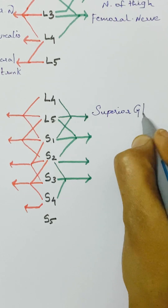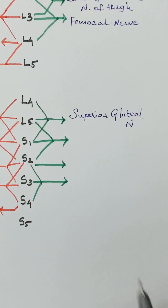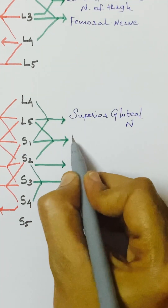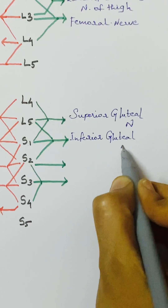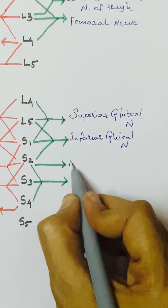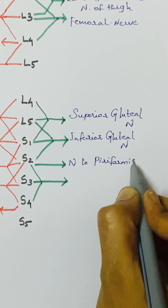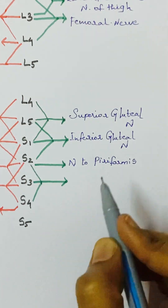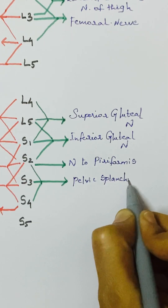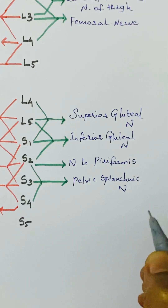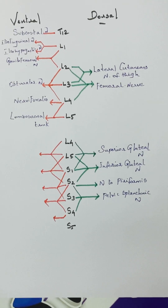From the dorsal rami: L4, L5, S1 gives the superior gluteal nerve, which supplies gluteus minimus and medius. From L5, S1, and S2 it is the inferior gluteal nerve, which supplies gluteus maximus. From S2, S3, S4 it is the nerve to piriformis. From S2, S3, S4 the dorsal rami also give the pelvic splanchnic nerve.